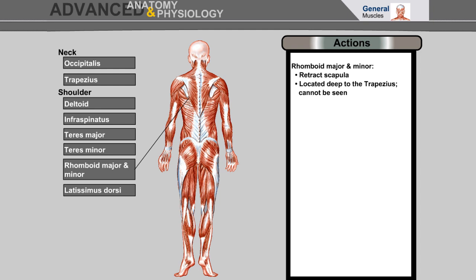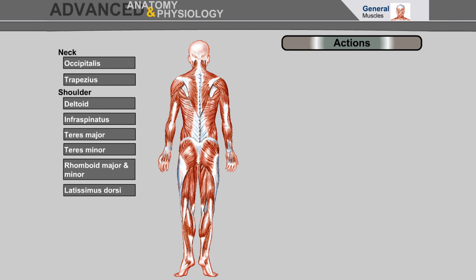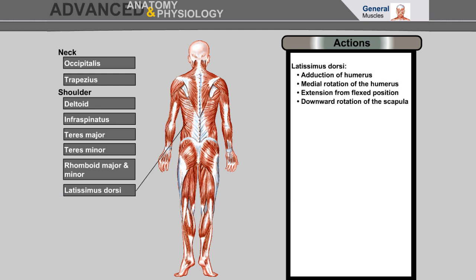Rhomboid major and minor retracts the scapula and is located deep to the trapezius where it cannot be seen. Latissimus dorsi: adduction of humerus, medial rotation of the humerus, extension from flexed position, and downward rotation of the scapula.